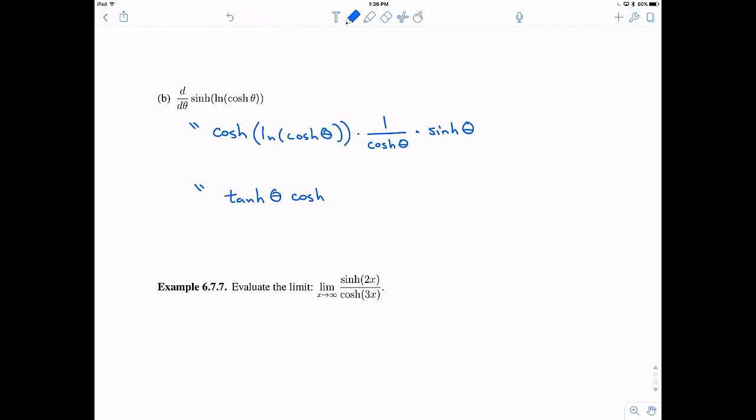We can rewrite this, right? Hyperbolic sine and hyperbolic cosine, together we'll make hyperbolic tangent. And then this other function.